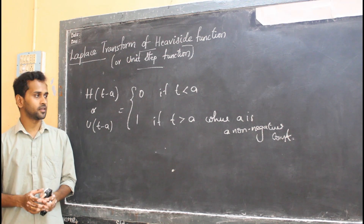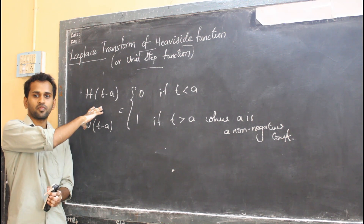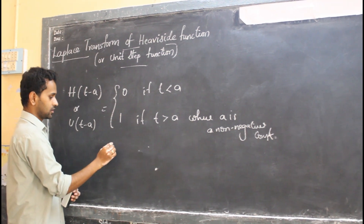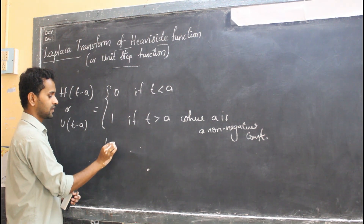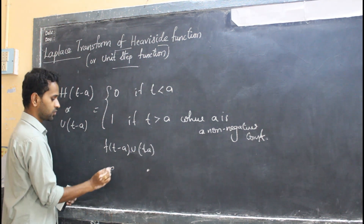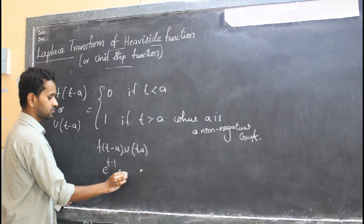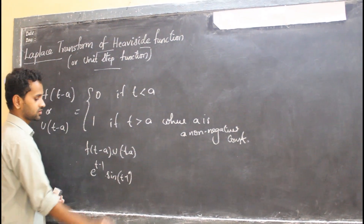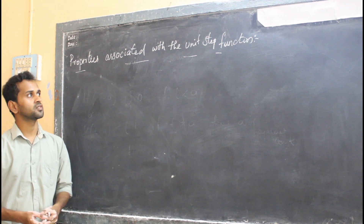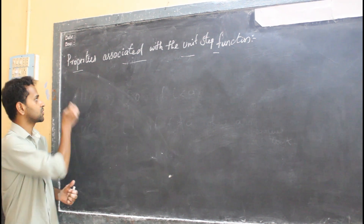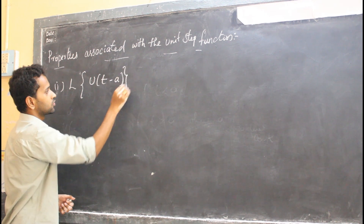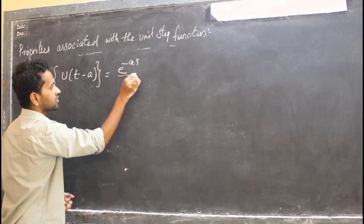We are finding the Laplace transform of functions of the form h(t − a) or u(t − a), such as e^(t−1) or sin(t−1). The Laplace transform of u(t − a) is equal to e^(−as) divided by s.